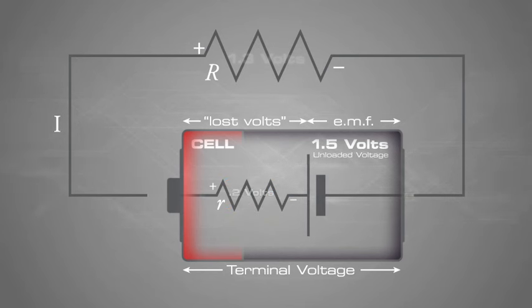When the circuit was not connected, the battery had an unloaded voltage rating of 1.5 volts. Once the circuit was connected and current started to flow, there was a voltage drop across the internal resistance of the device, and the applied circuit voltage was reduced to 1.3 volts.